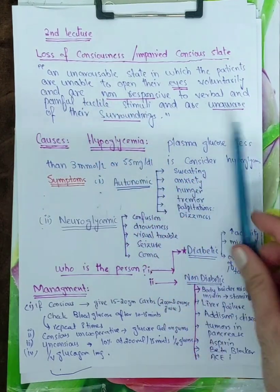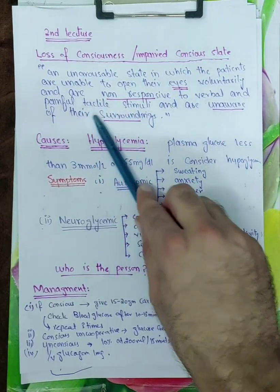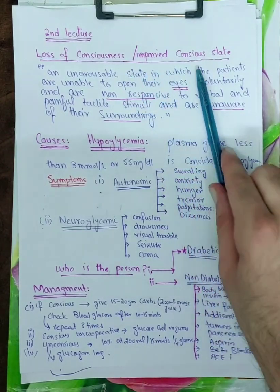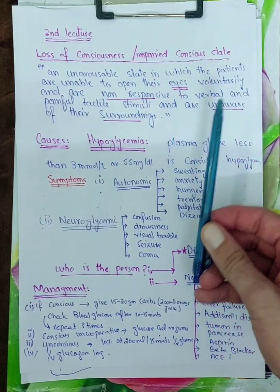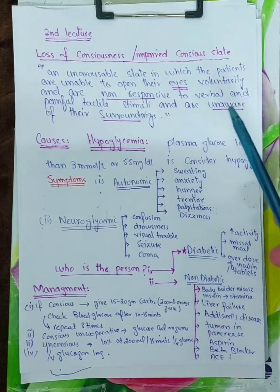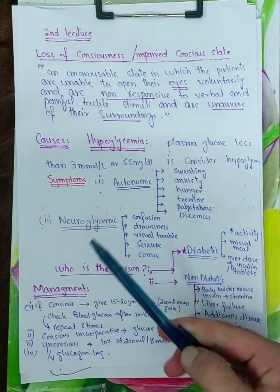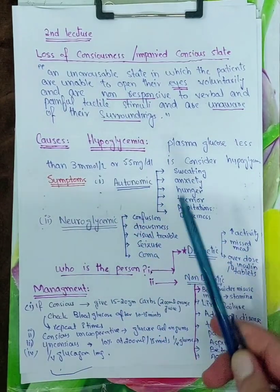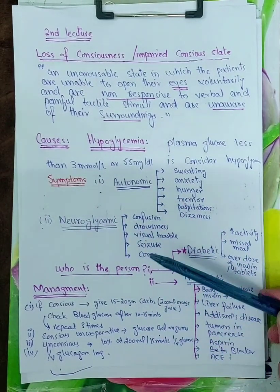And the fourth one is unaware of their surrounding. The patient in the state of impaired consciousness will not be aware of his surrounding, of what's going on. Now you are sitting in the OPD or in the clinic or in the emergency, but majority of the patients come to the emergency.